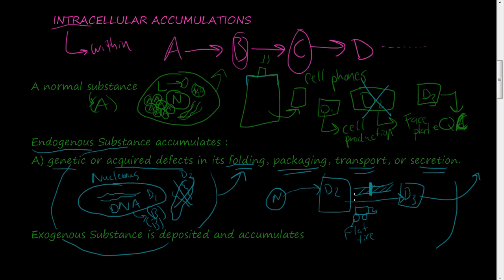There are whole mechanisms for how things are transferred throughout the cell. All these departments are analogous to organelles inside the cell - like a Golgi apparatus or endoplasmic reticulum. There's a whole process by which things are secreted from cells into the bloodstream or to adjacent cells. All of these folding, packaging, transportation, and secretion problems are going to cause a backup, and stuff is going to start accumulating inside the cells.